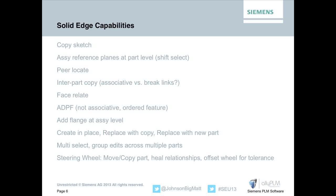If you do an in-place activate into a part at the assembly and hold the Shift key, you can select the top-level assembly's reference planes and get a great place to build features. Peer locate is another capability - everything you see today in my demo will be in ST5. I really wish I could have shown you peer locate in ST6, because we've changed the way we locate peer references. Inner part copies - some people don't do them because they don't want the associative links for file management, but there are great benefits for both approaches.